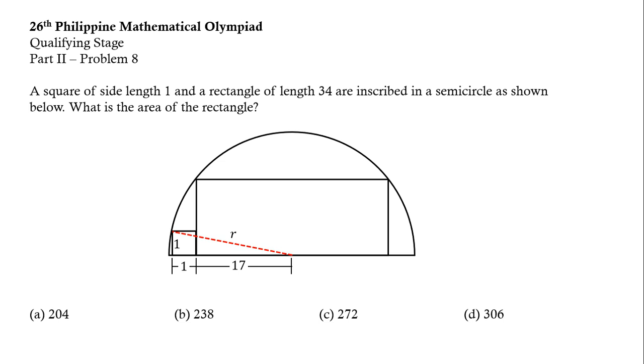Now let us solve for the value of R by using the Pythagorean theorem. So we have R squared equals 1 squared plus 18 squared. This is equivalent to R squared equals 325. So R is equal to 5 square root of 13. The radius of the semicircle is 5 square root of 13 units.